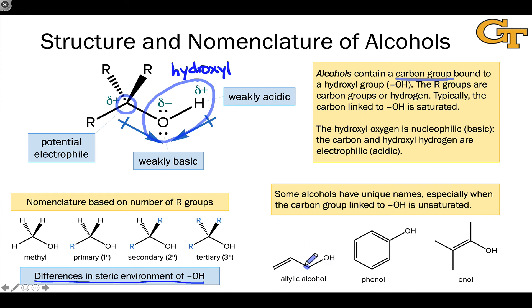Allylic alcohol, for example, contains an allyl group, carbon-carbon double bond linked to a saturated carbon linked to the hydroxyl group. Phenol contains a benzene ring bearing a hydroxyl group. And an enol contains a carbon-carbon double bond linked directly to the oxygen.